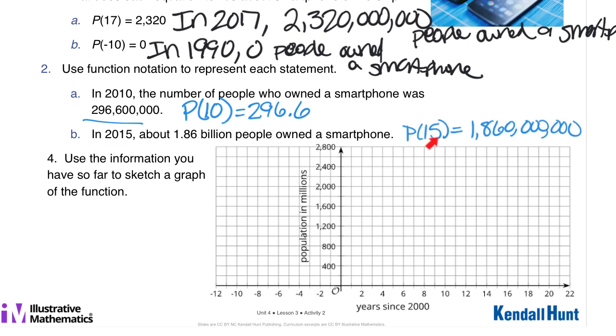In 2015, so it would be p of 15, about 1.86 billion people owned a smartphone. So that's this number written out, but we just want how many million that is. So it's going to be 1,860 million.